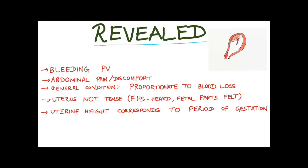In revealed type of abruptio placenta, there will be bleeding per vaginum, mild abdominal pain or discomfort, and the general condition is usually proportionate to the blood loss. The uterus is usually not tense, you can easily hear the fetal heart sound and feel the fetal parts, and the uterine height corresponds to the period of gestation.